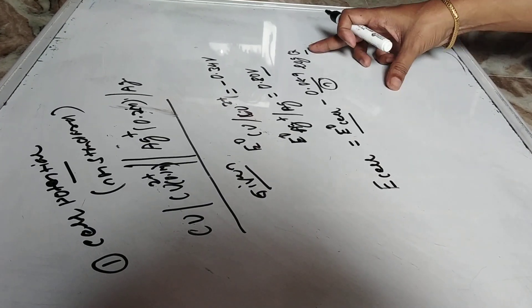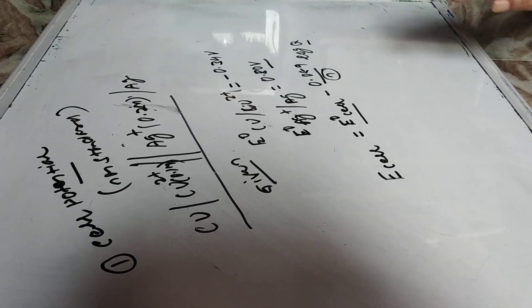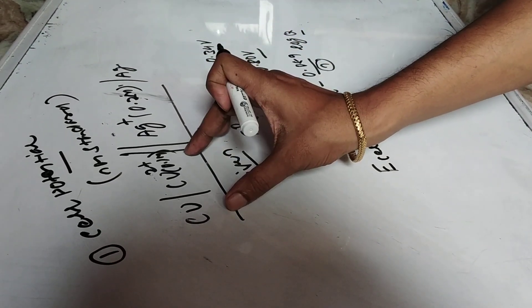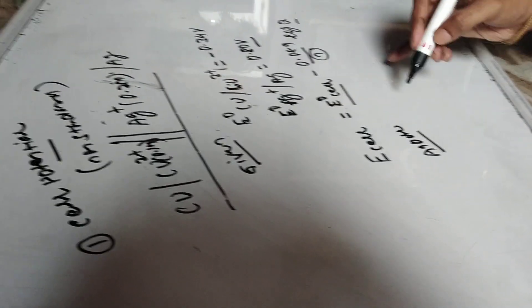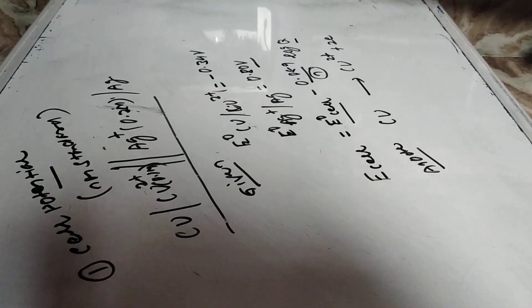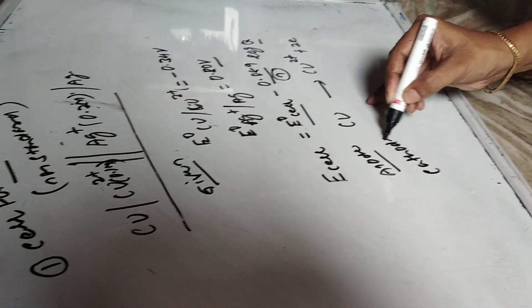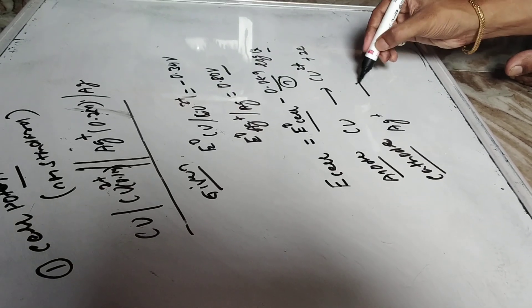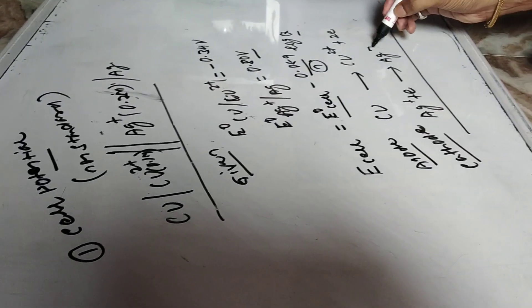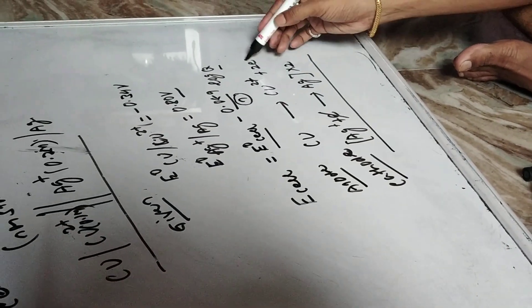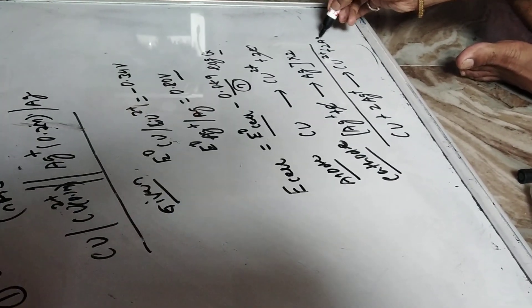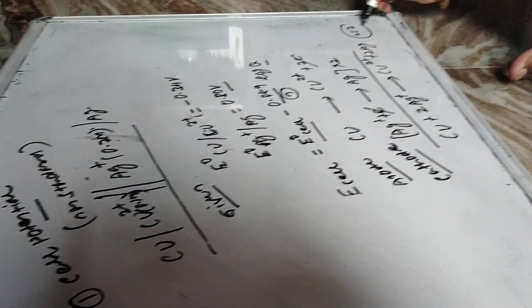Writing the cell reaction: at the anode (oxidation), Cu → Cu²⁺ + 2e⁻. At the cathode (reduction), Ag⁺ + e⁻ → Ag. To cancel electrons, we multiply the cathode reaction by 2. The net cell reaction is: Cu + 2Ag⁺ → Cu²⁺ + 2Ag. Therefore, n = 2, since 2 electrons are cancelled in the net cell reaction.